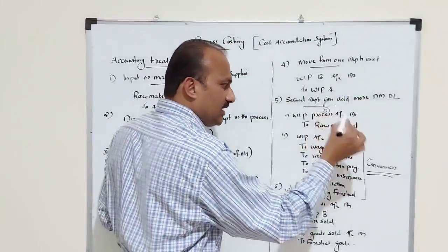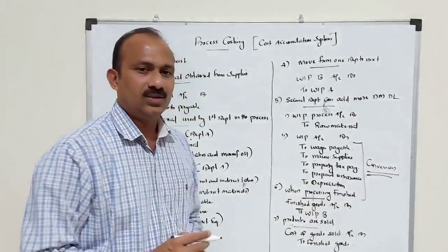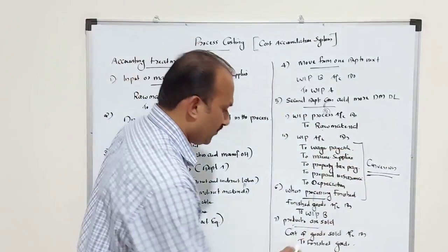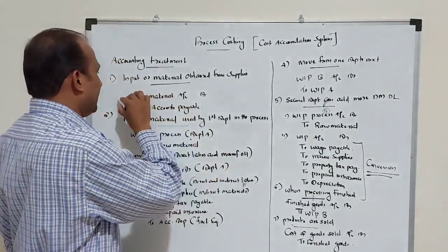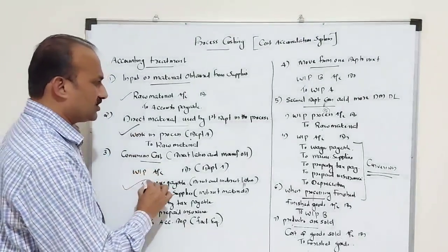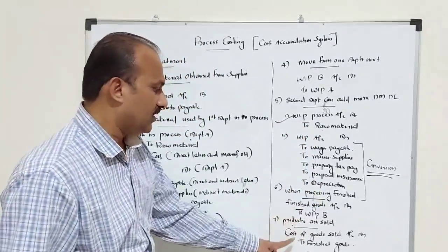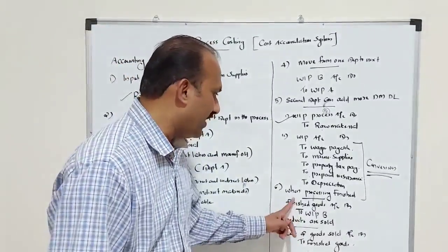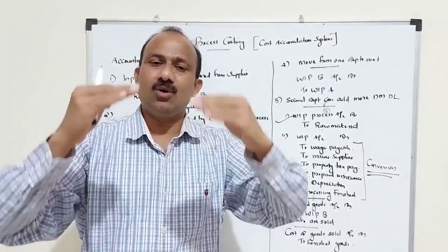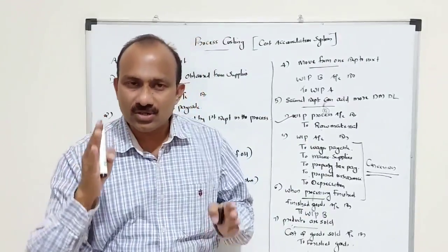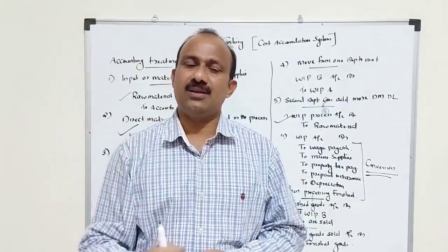Material and conversion cost are added in the second process, then finally you reach finished goods. When the goods are sold, finished goods move to cost of goods sold — Cost of Goods Sold is debited and Finished Goods is credited, nullifying it. So the accounting process of process costing is: material purchased → material in work in progress → conversion cost added → move to next process → add material and conversion cost in second process → reach finished goods → finally finished goods become cost of goods sold when products are sold. To study process costing you must understand its meaning, the processes involved, and the accounting treatment.